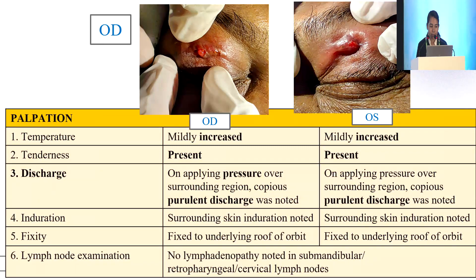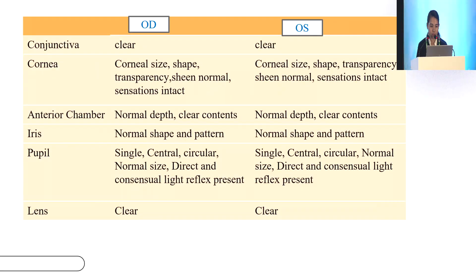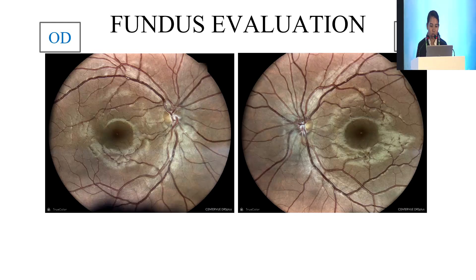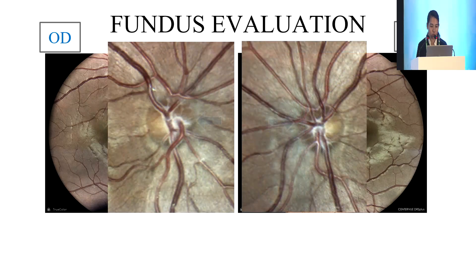On palpation, the temperature was raised and tenderness was present, and on applying pressure over the area, purulent discharge was seen to be exudating but there was no lymphadenopathy noted. The anterior segment examination was within normal limits and the pupil was normal size and reacting to light. On fundus examination, findings were within normal limits except for the nasal margin which showed disc blurring.